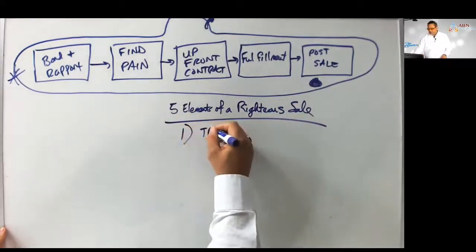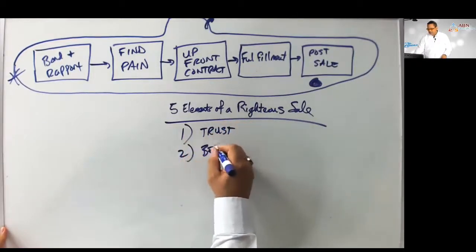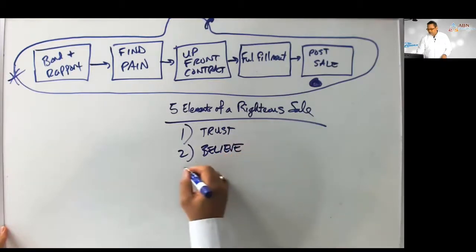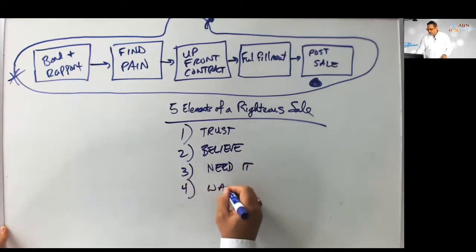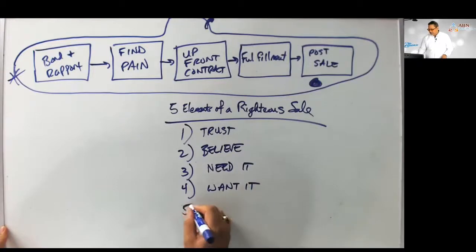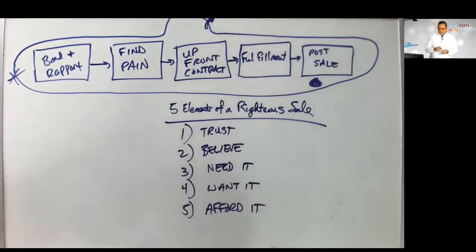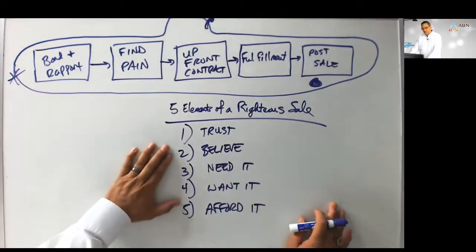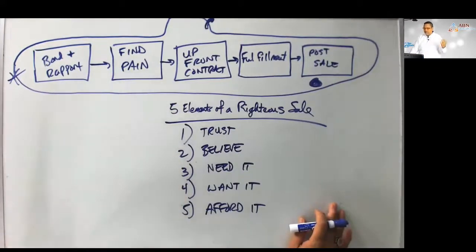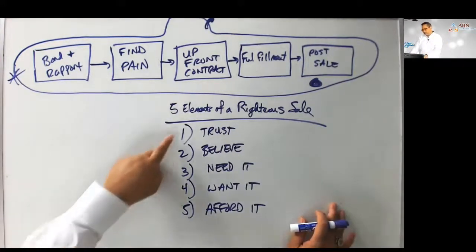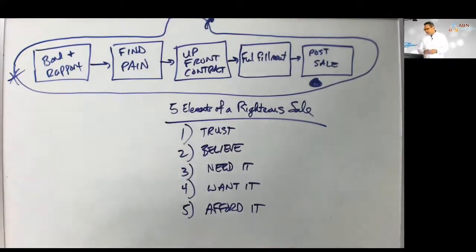The five elements of a righteous sale. First, they have to trust you. Number two, if they trust you, then they might believe you. Number three, they have to need it. Number four, they have to want it. Number five, they have to afford it. If you look at any reason why you don't close a sale, why you don't take care of a client, it's because of one or multiple of these five reasons. You can really self-coach. If you think back to why didn't I close, probably some of these. And then there's that 25% that you're not really supposed to close.